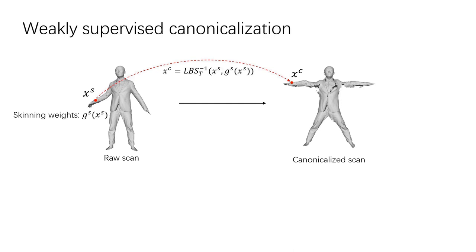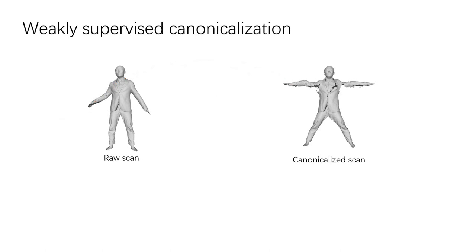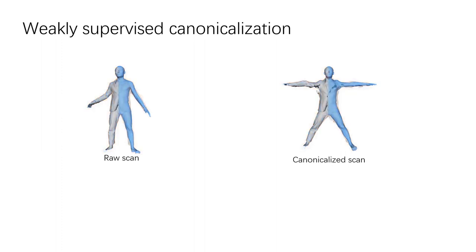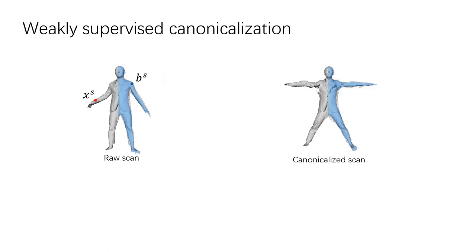It is challenging to learn skinning weights of the scanned surface since we do not have labeled skinning weights for it. We address this by leveraging two key observations. First, fitting a simple body model to scans is more tractable than surface registration, and the fitted body model can provide guidance to help learn skinning weights on the surface. Second, articulated transformations should support geometric cycle consistency.